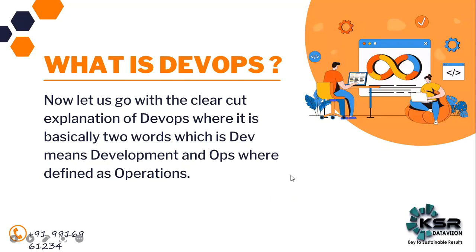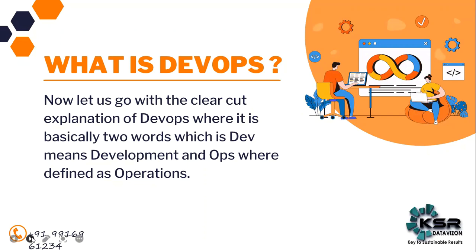There are multiple applications coming into the market, and because of this the end user's time is being reduced - it is saving their time. Applications are playing a big part here. Who is making those applications reach the end user? This DevOps process. We are also getting multiple updates to our applications, meaning DevOps engineers are responsible for developing updates and pushing them out so end users can download the latest versions.